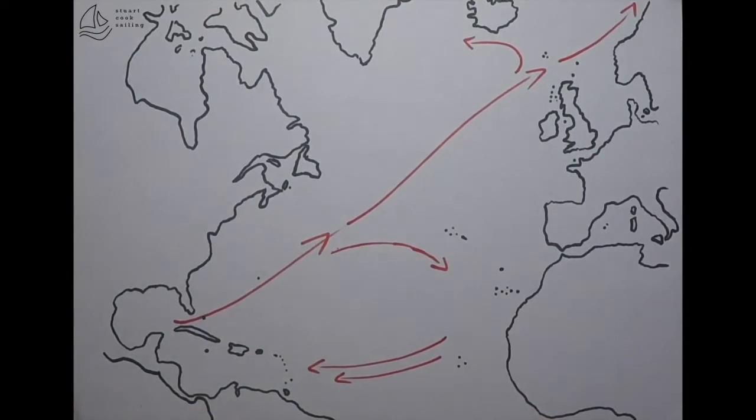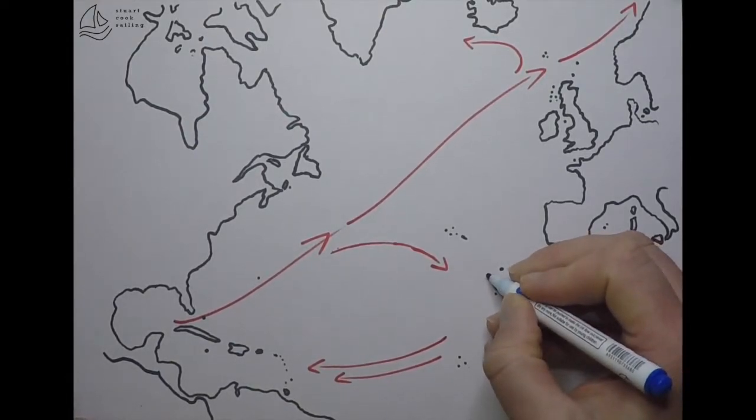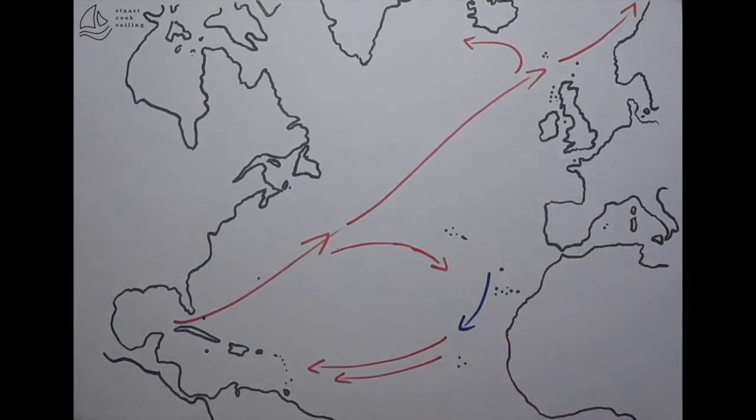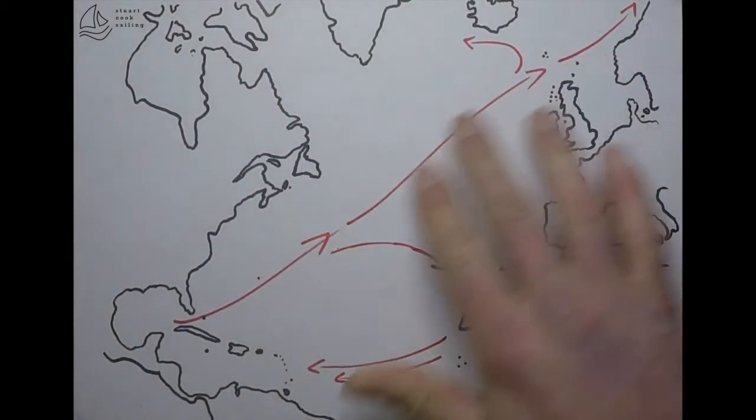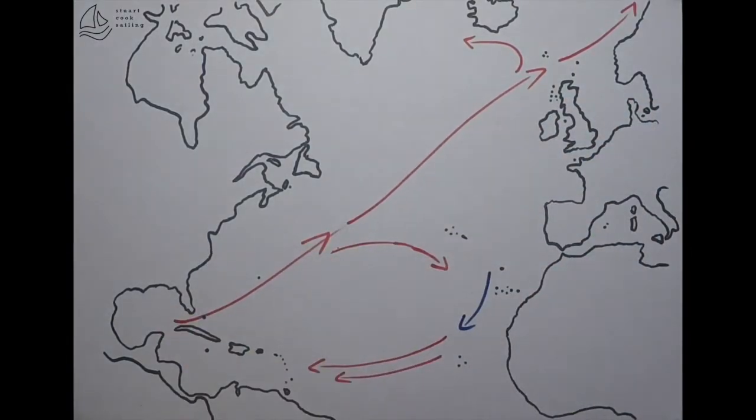We also see on the eastern side a cold current called the Canary current. The reason it's a cold current coming down there isn't that it's bringing cold waters from the north. As you can see, this is all warm water that has been pushed across from essentially the tropics.